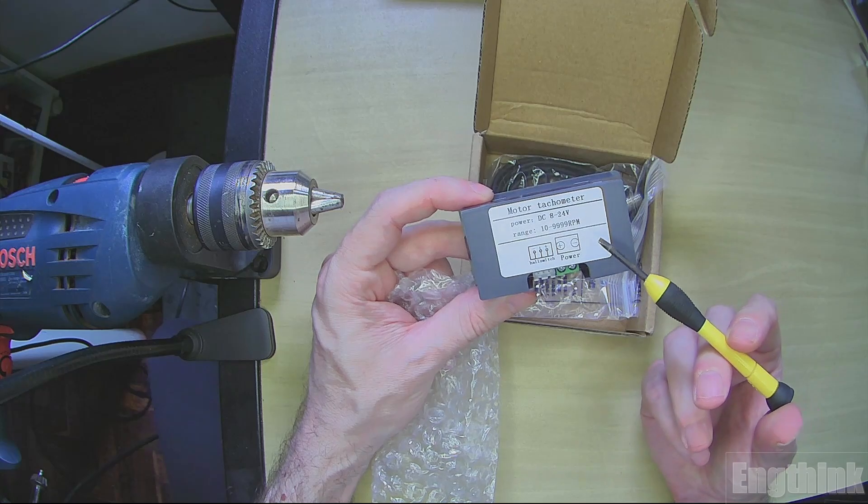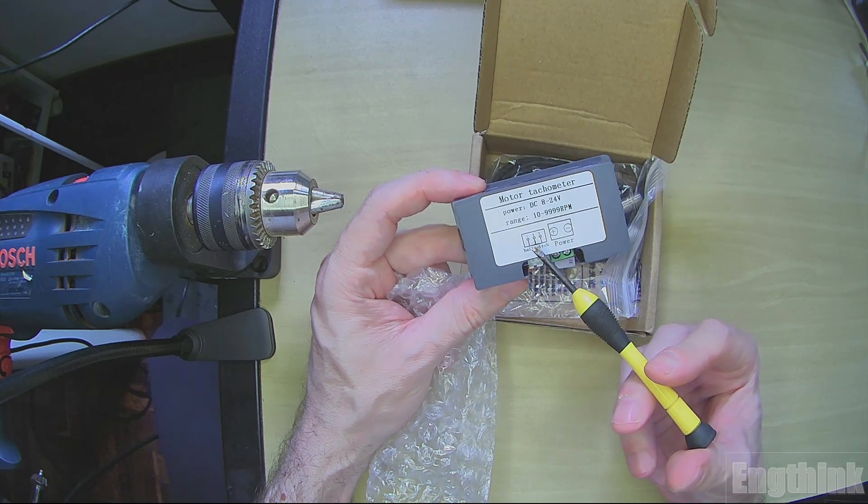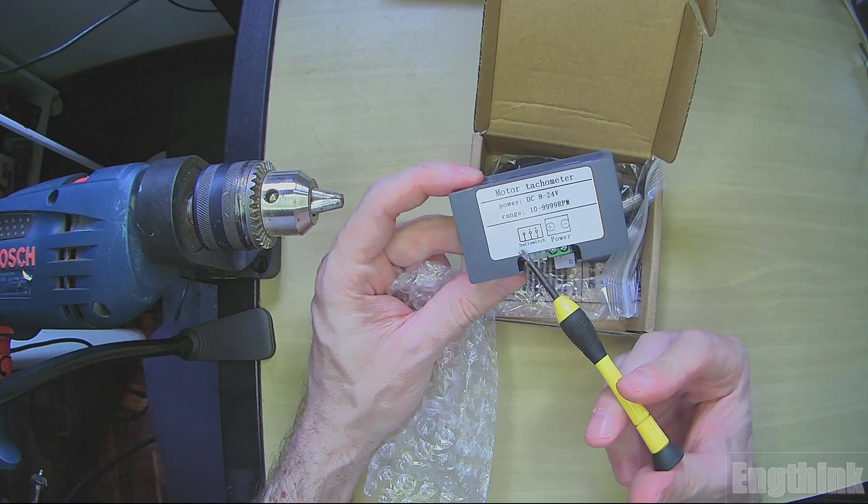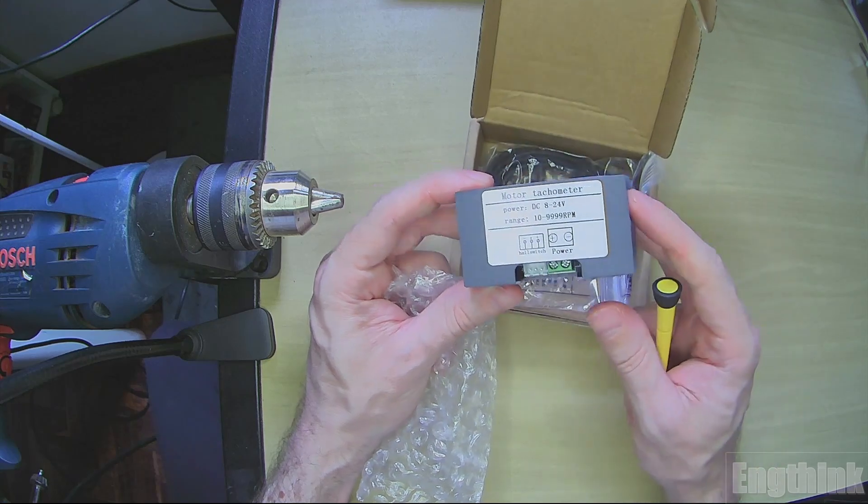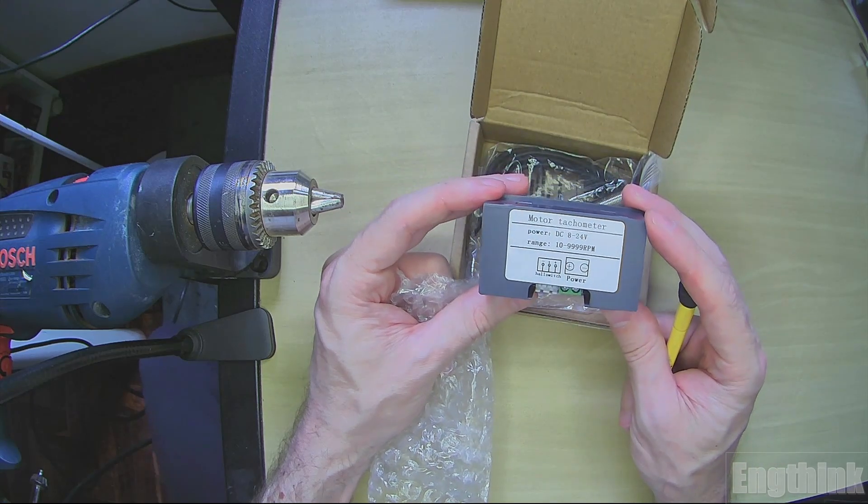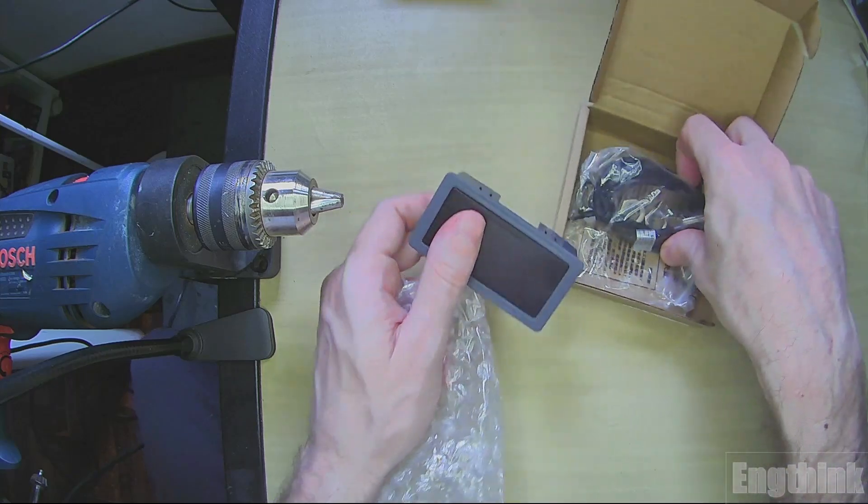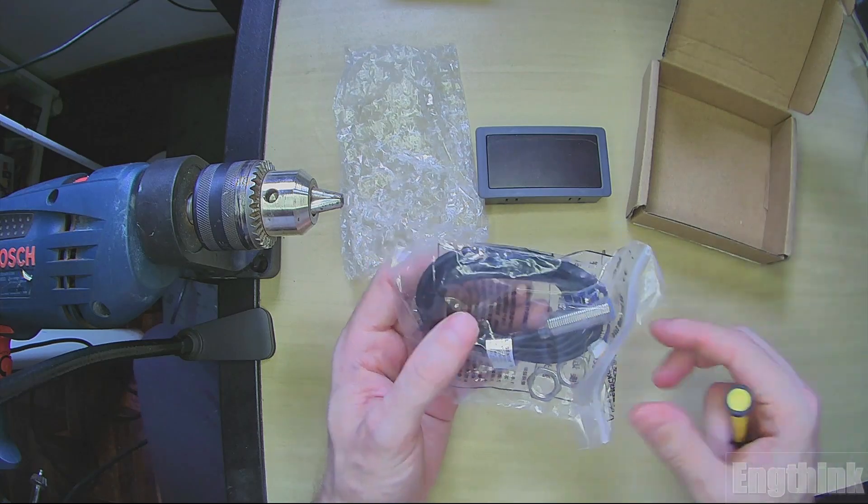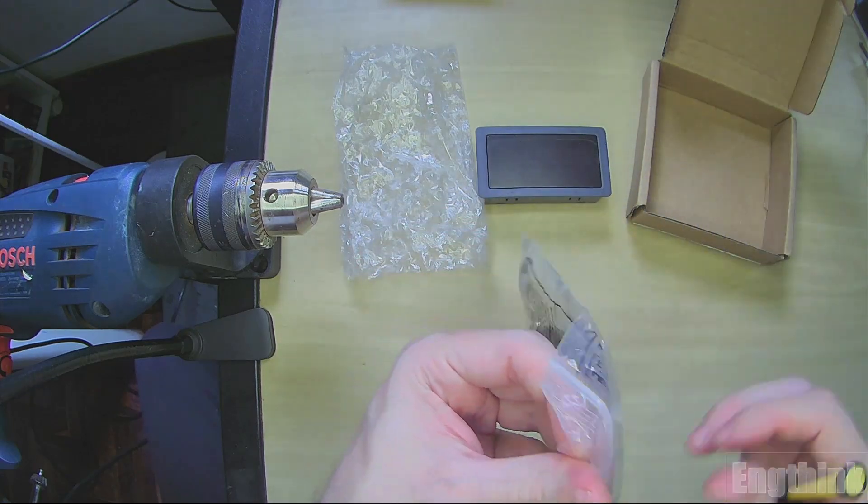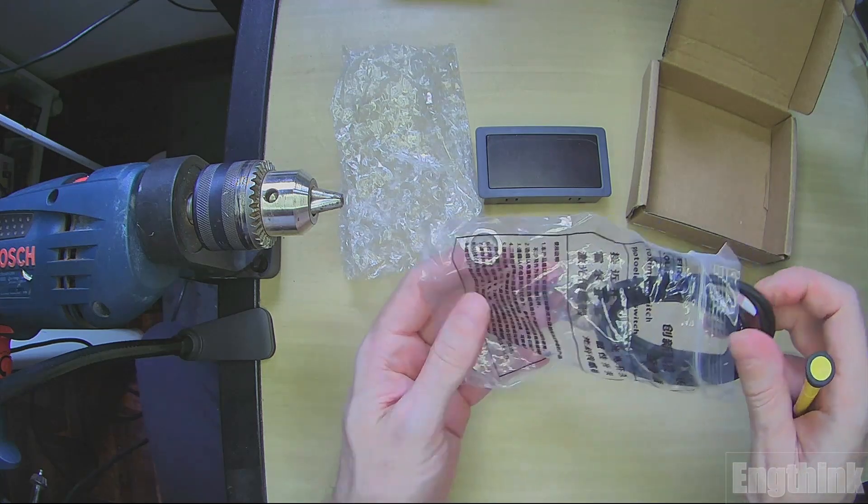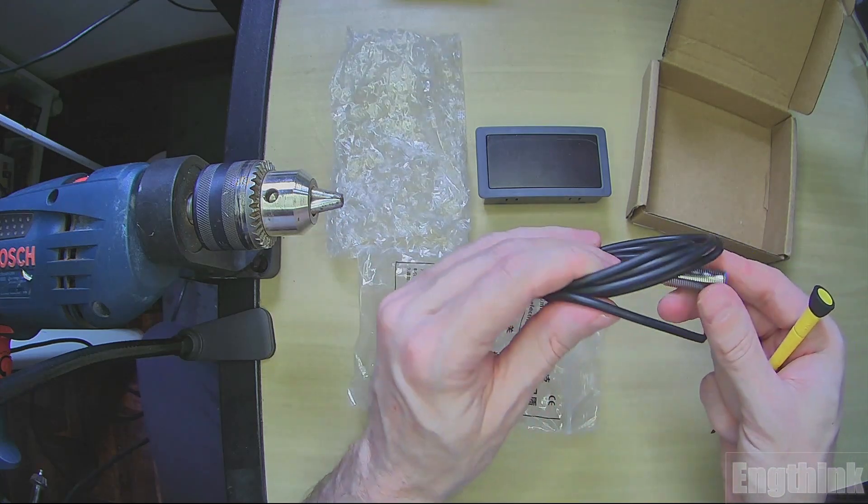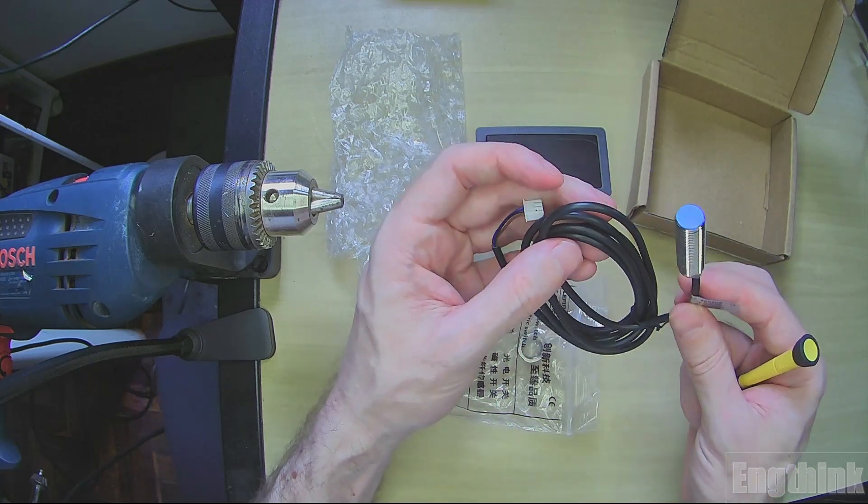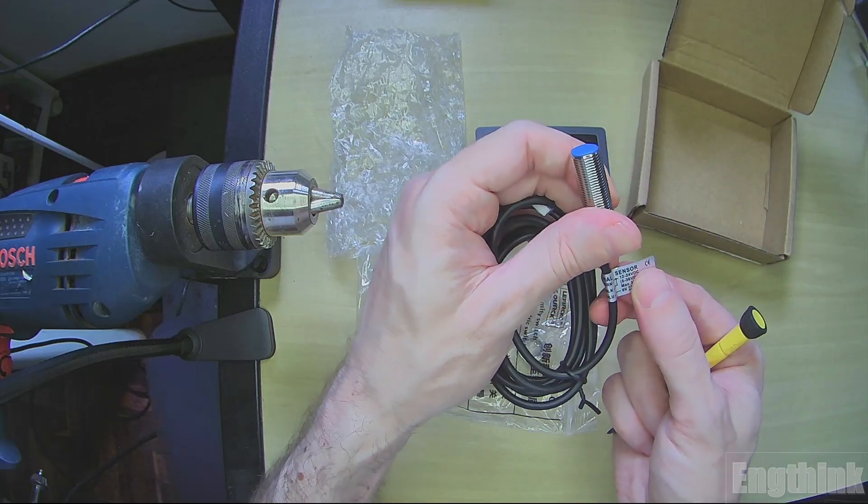And we have a second connector for the sensor itself. We have the information that it's a Hall switch. Basically the principle of work of this tachometer is through this Hall effect sensor. If we open the plastic bag we can see that the sensor is very similar to an industrial inductive sensor, but this one will operate only with a magnet.